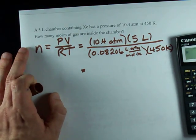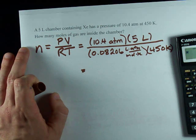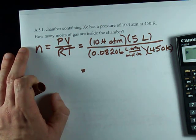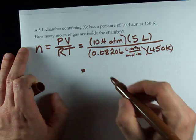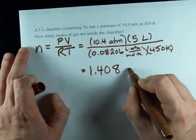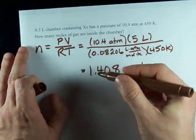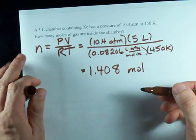So, on the calculator, I got 10.4 times 5, divided by 0.08206, and also divided by 450, 1.408. Nice. And now I've solved for the number of moles in the chamber.